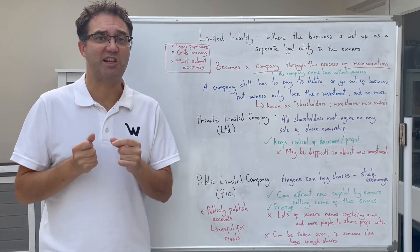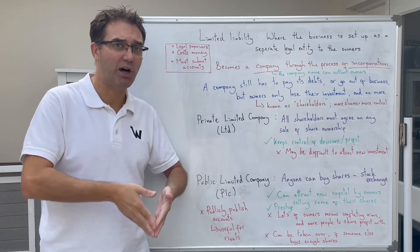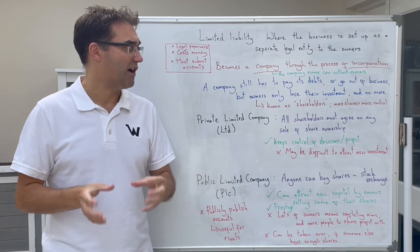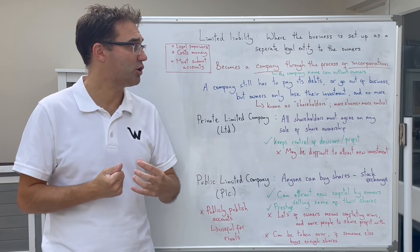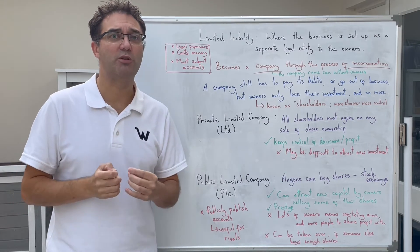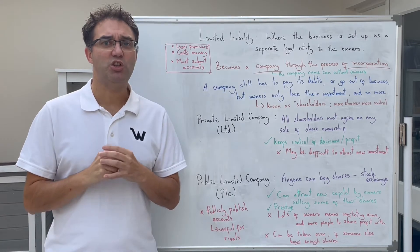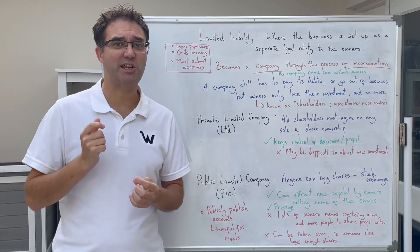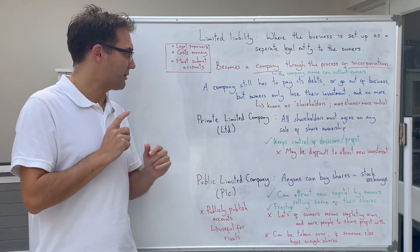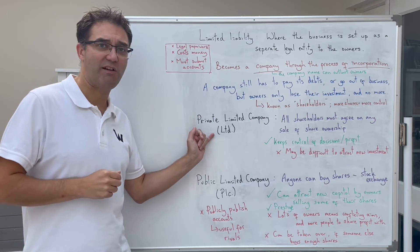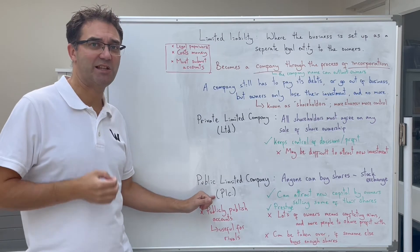What this means is that the owners now become what we call shareholders — they own a share or a part of that business. The more shares you have, the more control or say you have over how that business is run. You'll be able to tell if a business has limited liability simply by looking at its name — it will have three letters after it. If it's a private limited company, it will have the letters LTD. If it's a publicly limited company, it will have the letters PLC.